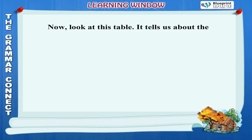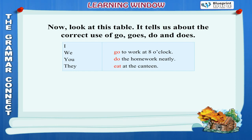Now look at this table. It tells us about the correct use of go, goes, do and does. I/We/You/They go to work at 8 o'clock. I/We/You/They do the homework neatly. I/We/You/They eat at the canteen. He/She/Rajan/Rupa goes to work at 8 o'clock. He/She/Rajan/Rupa does the homework neatly. He/She/Rajan/Rupa eats at the canteen.